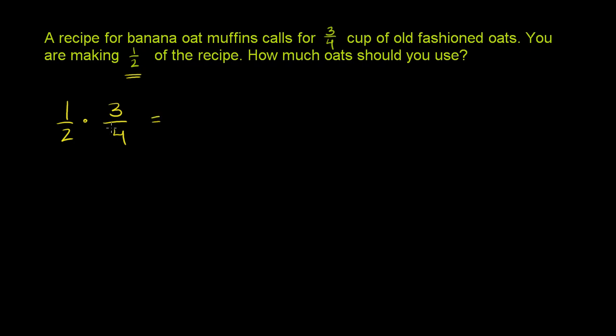And this is equal to, you multiply the numerators, 1 times 3 is 3, 2 times 4 is 8. And we're done. You need three-eighths of a cup of old fashioned oats.